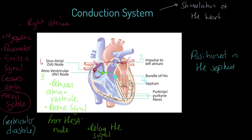What this bundle of His is going to do: positioned in the septum, it's going to separate the signal, which is a single signal at this point, separate the signal into left and right branches.